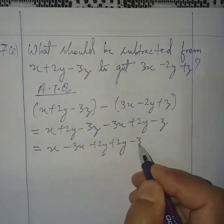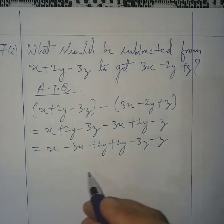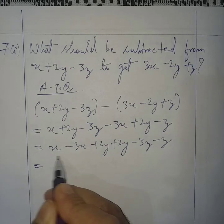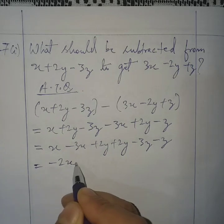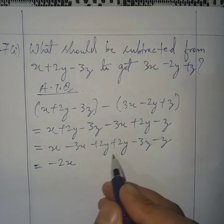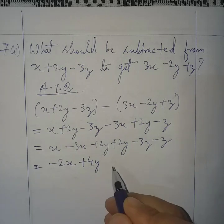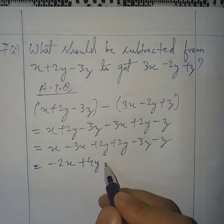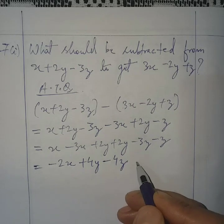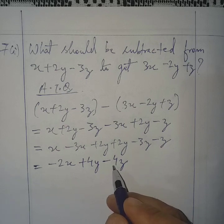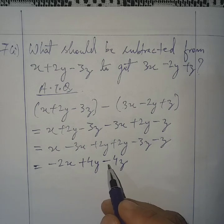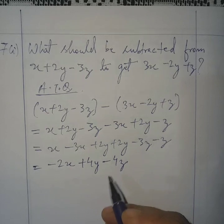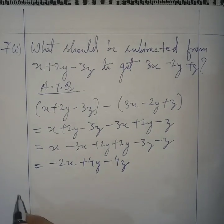Here the like terms: x minus 3x gives minus 2x. Then 2y plus 2y gives plus 4y. And minus 3z minus z is minus 4z. So this algebraic expression, if we subtract it from this, we will get that. Next is question number 8.